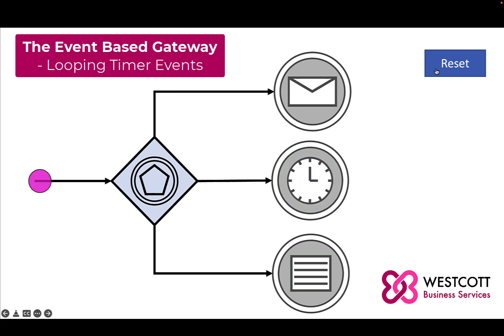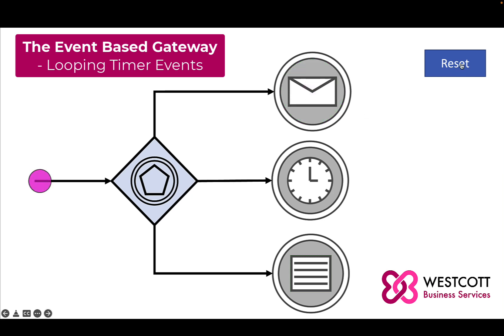I can reset this now and run through the same scenario for the other two events — the message event and the conditional event. Clicking the event-based gateway brings the token to the gateway, switching on the intermediate events in anticipation of one of those events occurring. On this occasion it goes to the message intermediate event. I can reset again, bring the token back to the gateway, and this last scenario shows the token being pulled to the conditional intermediate event.